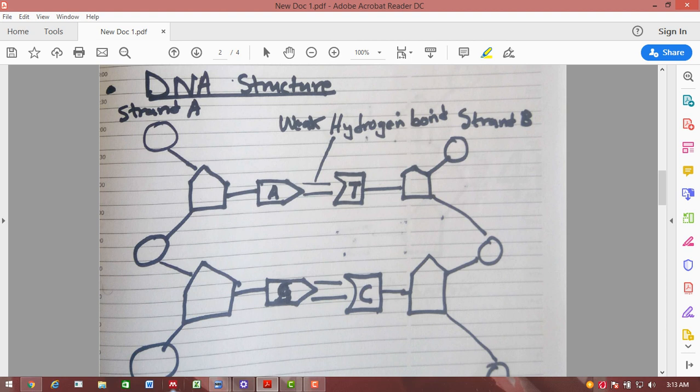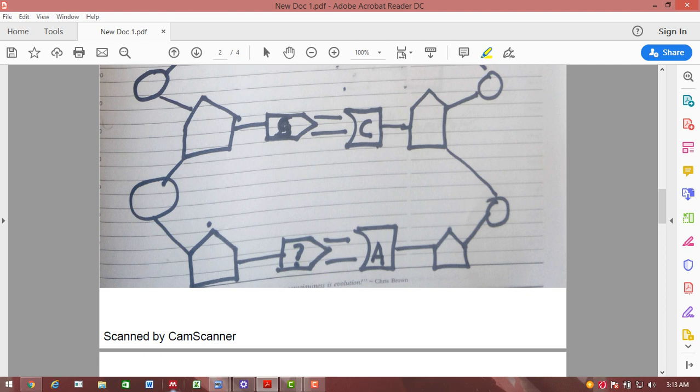Now the guanine pairs with cytosine following that manner. But look at this: in most of the questions when they test students, often they put equal signs or X's asking that if you have adenine in the DNA structure. Immediately when you see two strands you know that this is a DNA structure. If you have adenine you know that obviously it will pair with thymine.